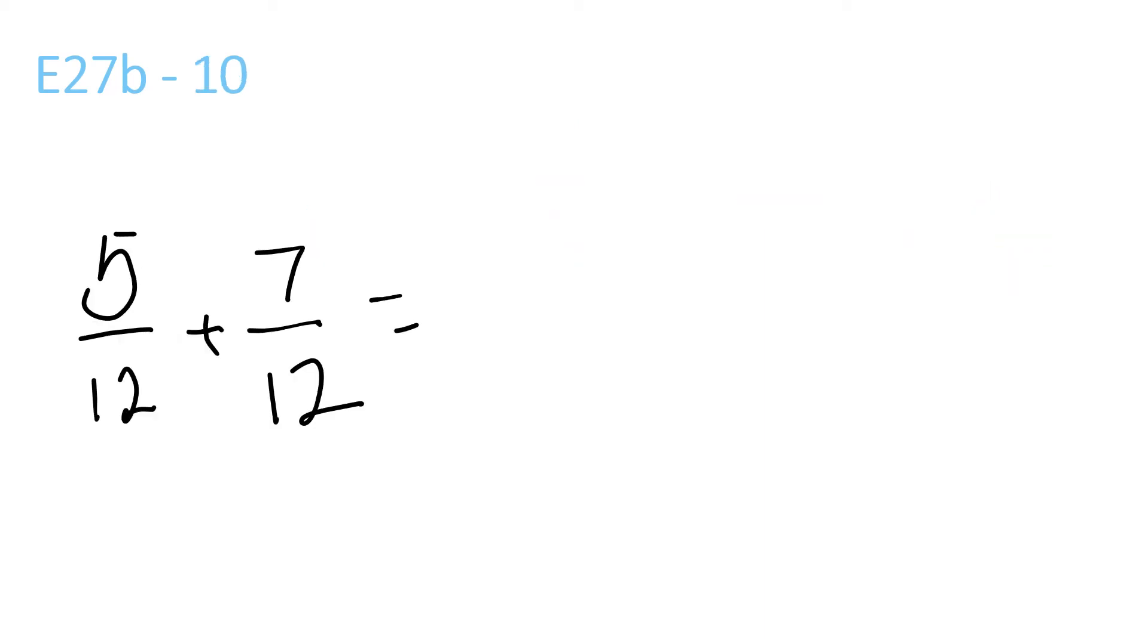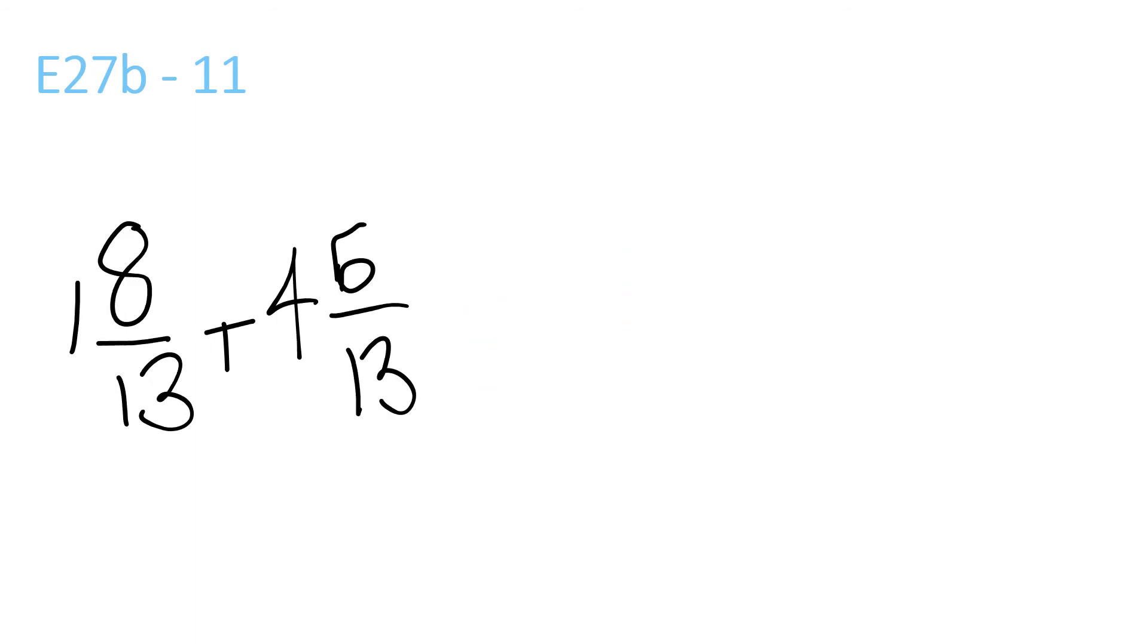Next question: 5 plus 7 is 12 over 12, equal to 1. 4 plus 1 equals 5. 6 plus 8 is 14 over 13, which equals 6 and 1 over 13.